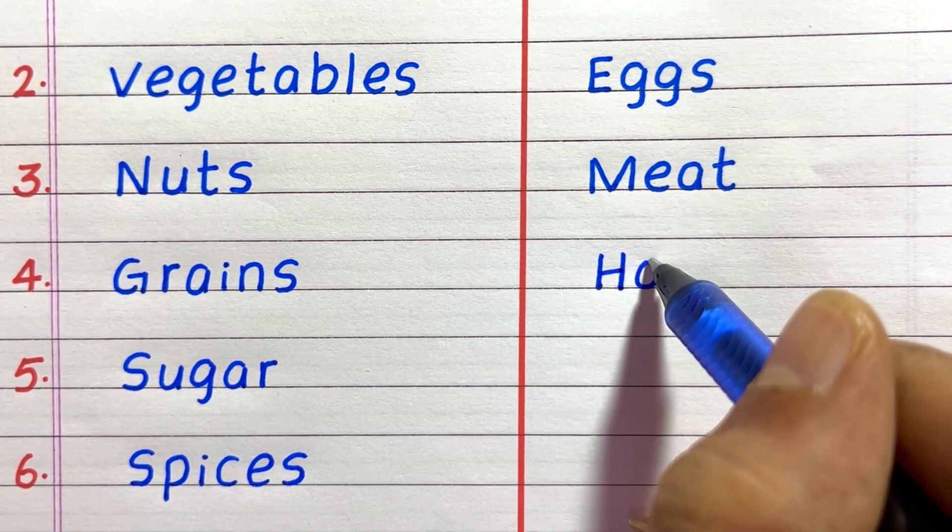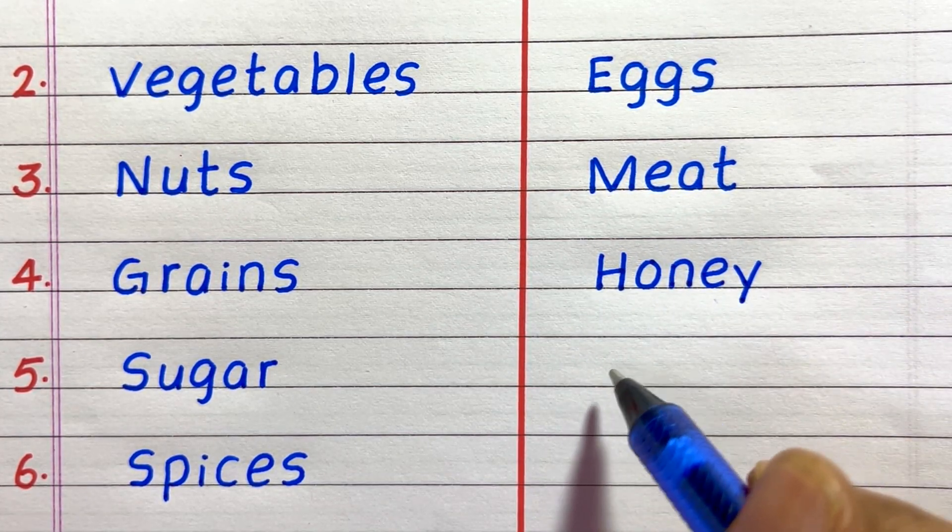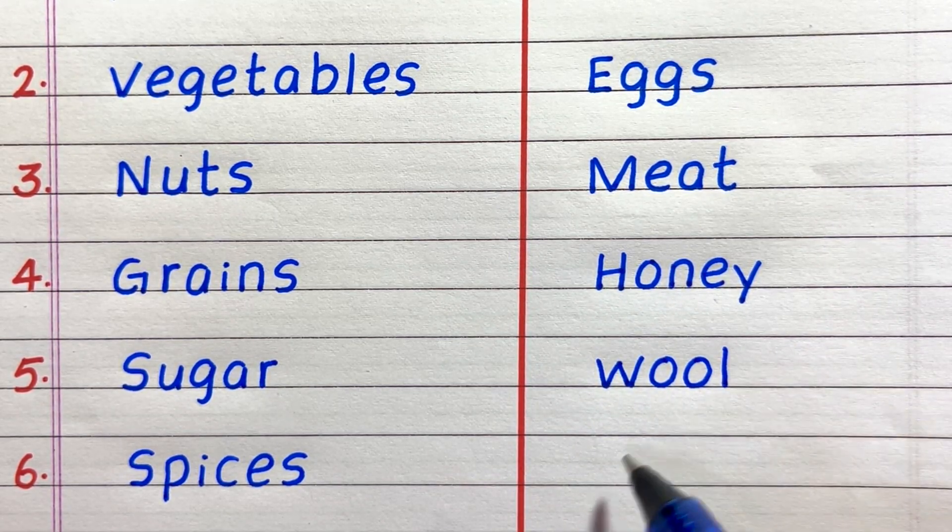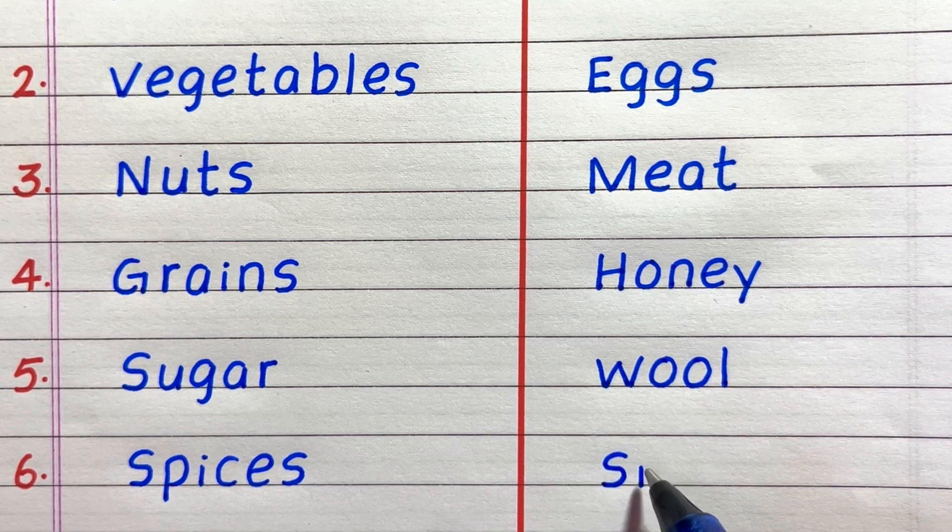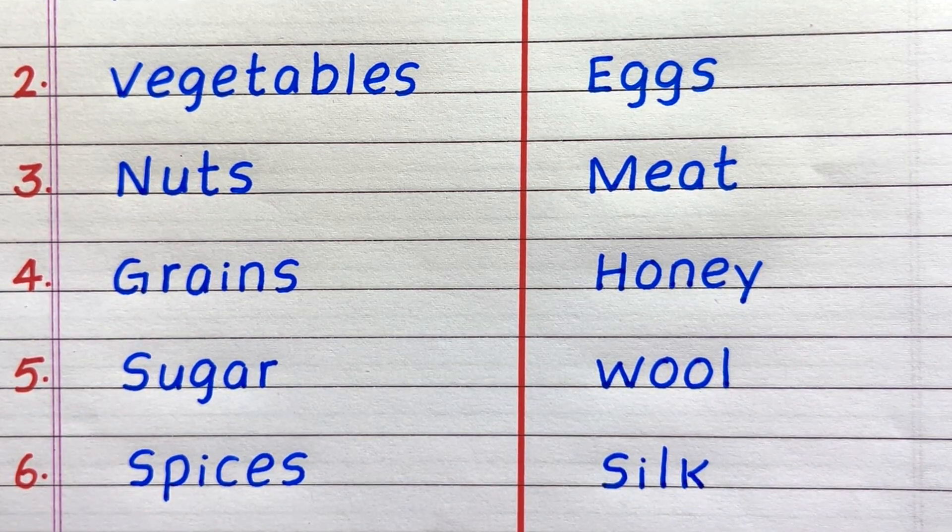Fourth thing that we get from animals is honey. Fifth, wool. Sixth, silk.